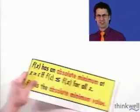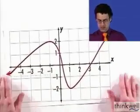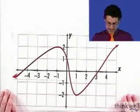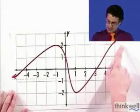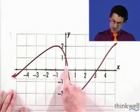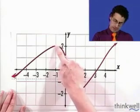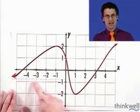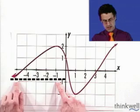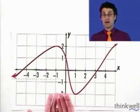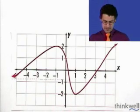Let's take a look at some examples so you can see this nomenclature in action. Here I've got this wacky function. It goes way up here, then it comes down, it dips, it goes up, it takes a little peek up here, then it comes down, then it's asymptotic to this dotted line. Let's see what we can say about the extrema — that's the max and the min.